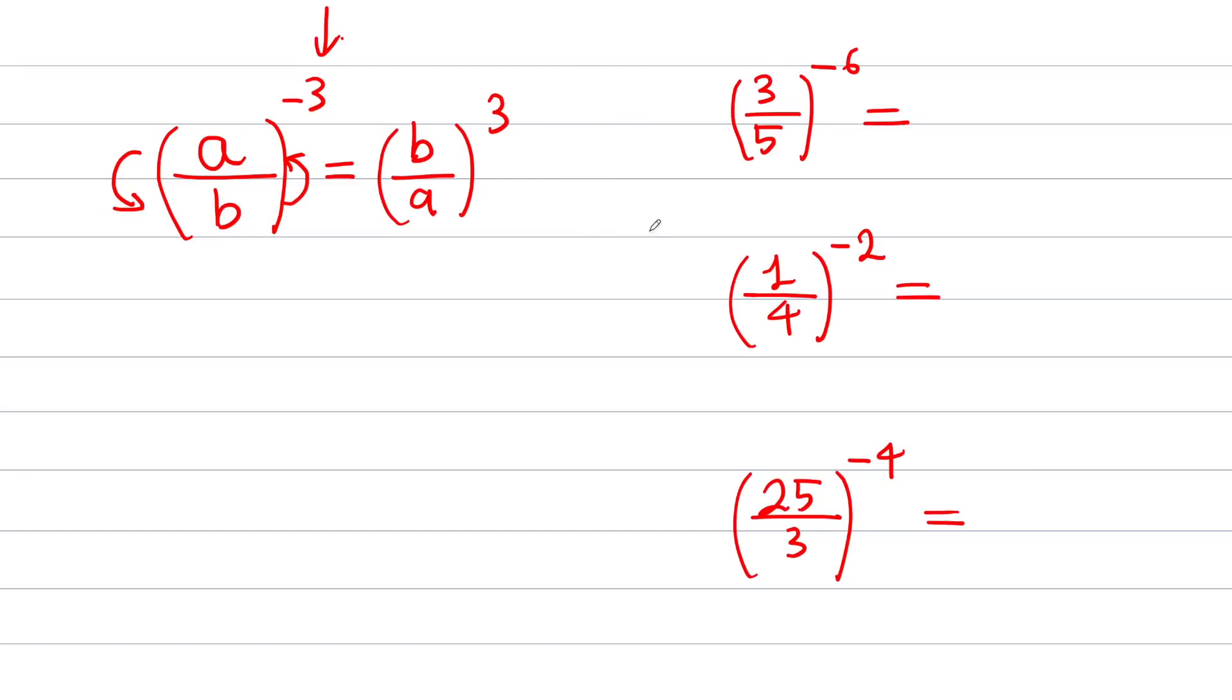Three more examples. 3 over 5 to negative 6 power can be rewritten as 5 over 3 to 6 power. 1 over 4 to negative 2 power can be rewritten as 4 over 1 squared. 25 over 3 to power of negative 4 will be 3 over 25 to power of 4.